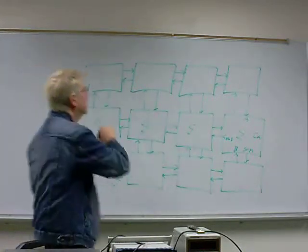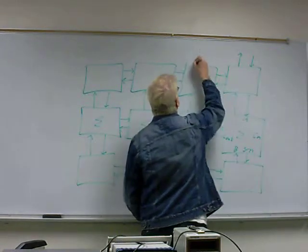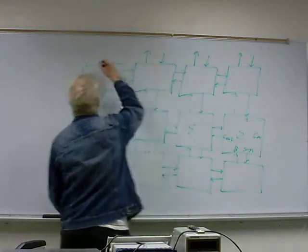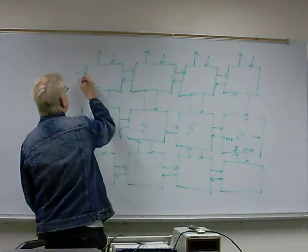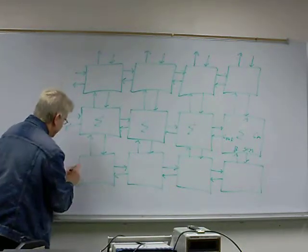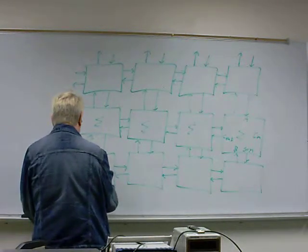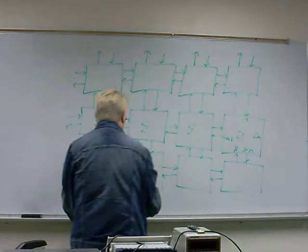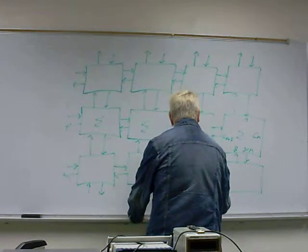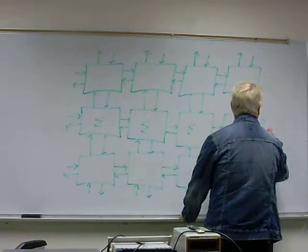The cells on the edges also have inputs and outputs, but they're not connected to any other cells. These are available to be connected to pins on the outside of the chip or substrate. The implementation decides what access you have to these edge cells, but hopefully you have access to some of them, because this is how you get in and out of the system from the outside world.